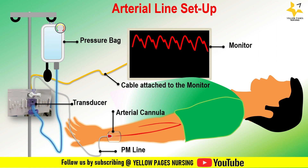Position the transducer at the level of the right atrium. Maintain pressure bag at 300 mmHg. Check the site and position of the arterial line. Perform zeroing and square wave testing as and when required.